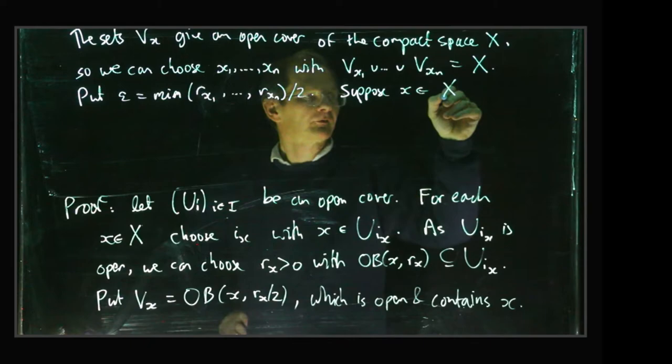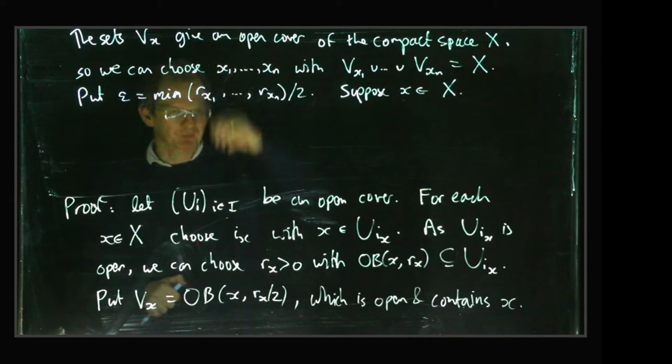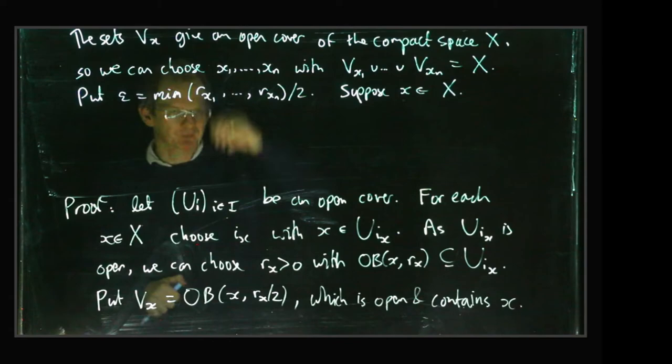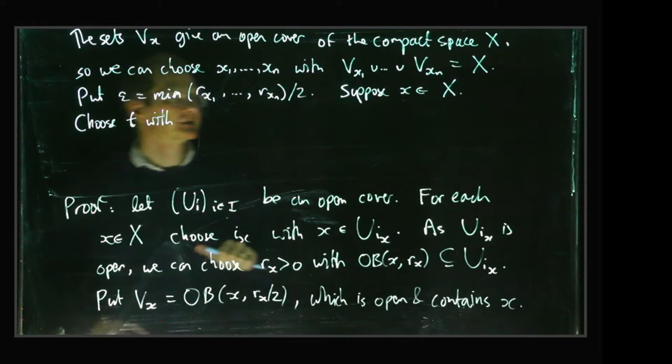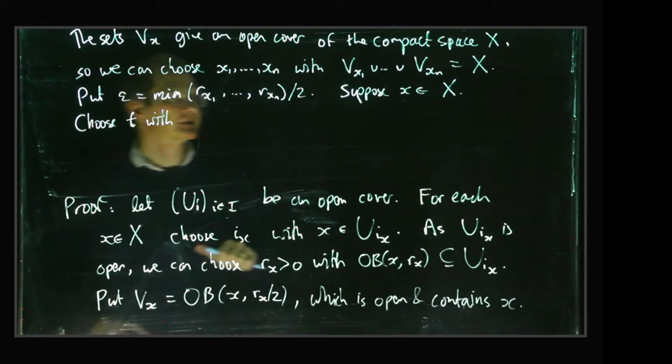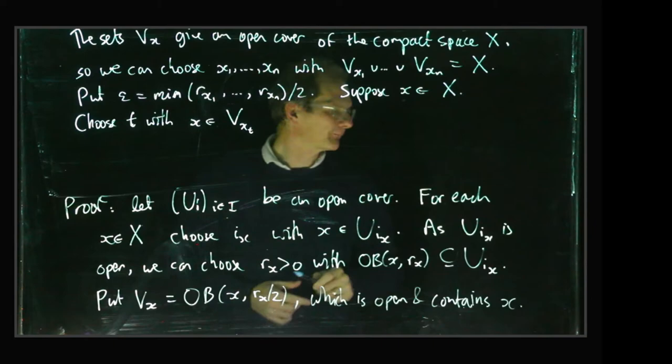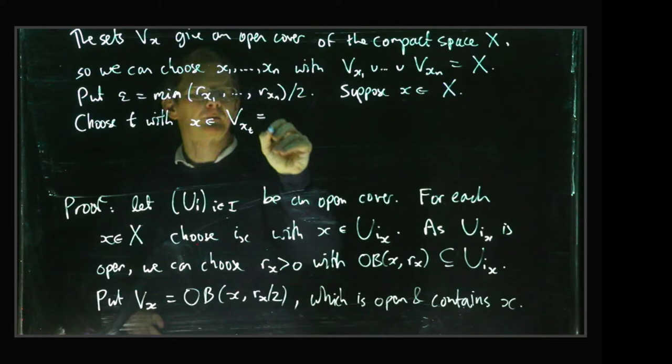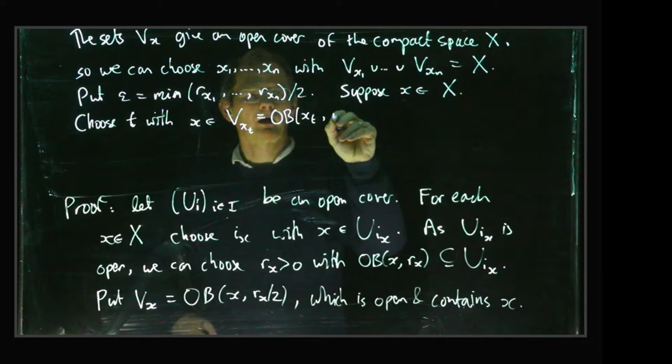Okay, so we're going to take some x in X and we need to show that the open ball of radius epsilon around x is contained in one of the sets of the original cover. So we can choose t with little x lying in V_xt. We know that this finite union is the whole space X, so we've got our little x here, it must lie in one of these sets. So you can choose some t with x lying in V_xt, and let's just remember what the definition of that was: that was the open ball around xt of radius r_xt over 2.